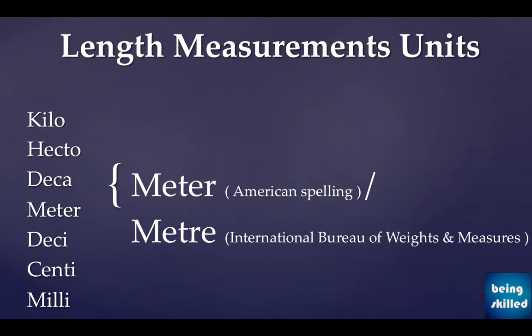So we have other larger and smaller units, namely kilo, hecto, deca, then we have deci, centi, and milli. The largest unit among all of these is kilo, then hecto, then deca, then meter, then deci, then centi, and milli.